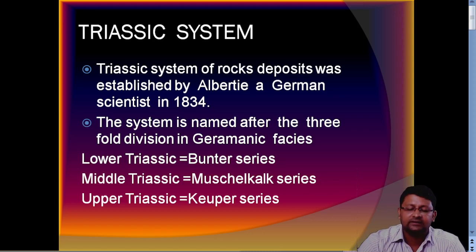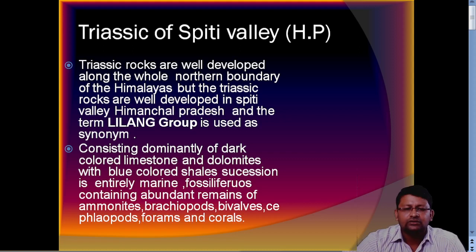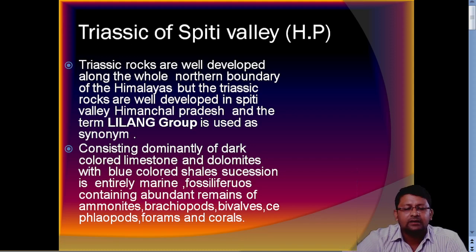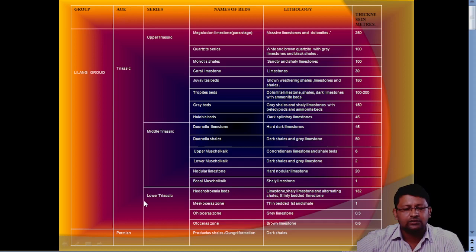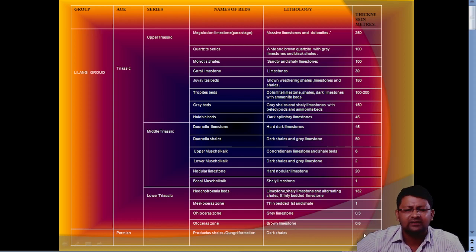The Spiti Valley succession consists of limestone and dolomite with blue-colored shale. The thickness is around 180 meters.